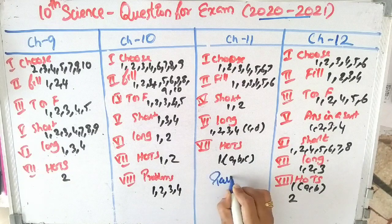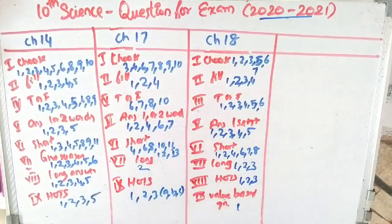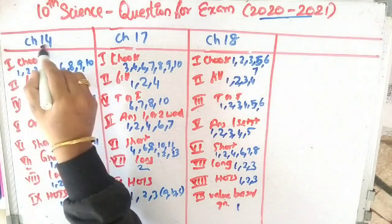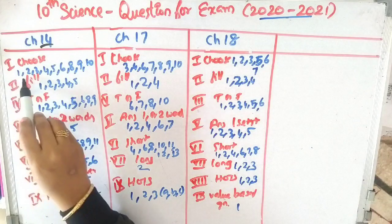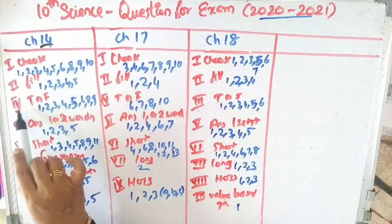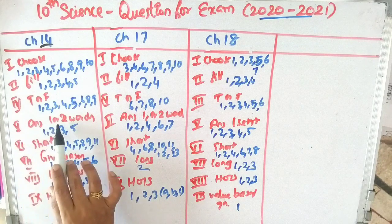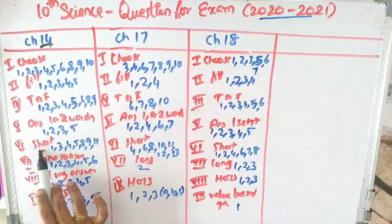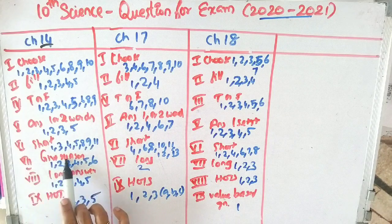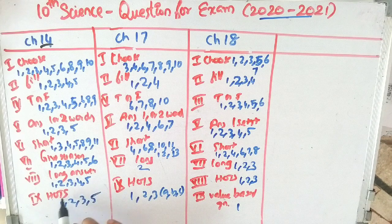Hot question: questions 1, 2, 3. Questions 1, 2. True or false — fourth Roman numeral: questions 1, 2, 3, 4, 5, 6, 8, 9. Fifth Roman numeral — answer in 1 or 2 words: questions 1, 2, 3, 5. Sixth Roman numeral — short answer: questions 1, 3, 4, 5, 8, 9, 11. Seventh Roman numeral — give reasons: questions 1, 2, 3, 4, 5, 6. Eighth Roman numeral — long answer: questions 1, 2, 3, 4, 5. Ninth Roman numeral — hearts question.